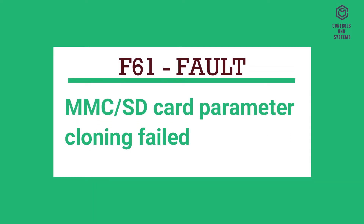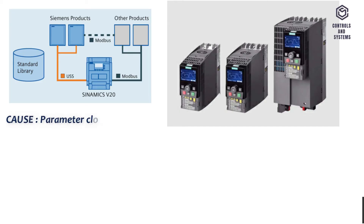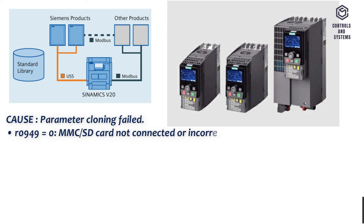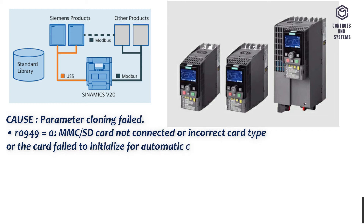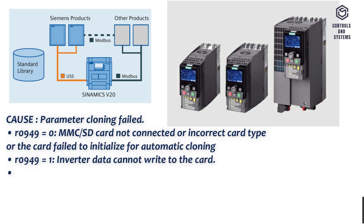F61 Fault: MMC/SD card parameter cloning failed. Cause: Parameter cloning failed. R0949 equals 0: MMC/SD card not connected, incorrect card type, or the card failed to initialize for automatic cloning. R0949 equals 1: inverter data cannot be written to the card. R0949 equals 2: parameter cloning file not available.